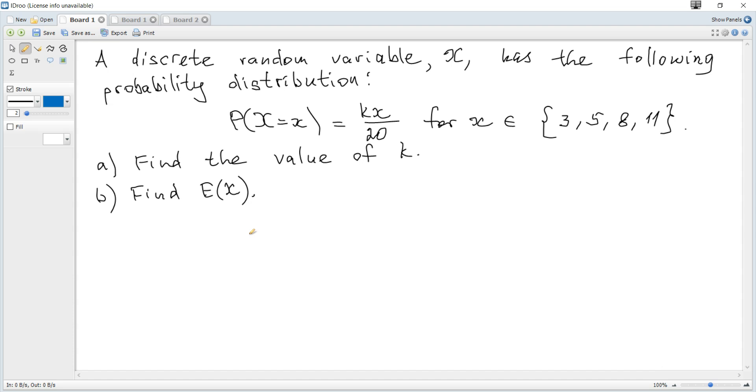A discrete random variable x has the following probability distribution. Question A: Find the value of k. Let's make a table for a given distribution to make it more clear. And it looks like this: X values and the corresponding probabilities.